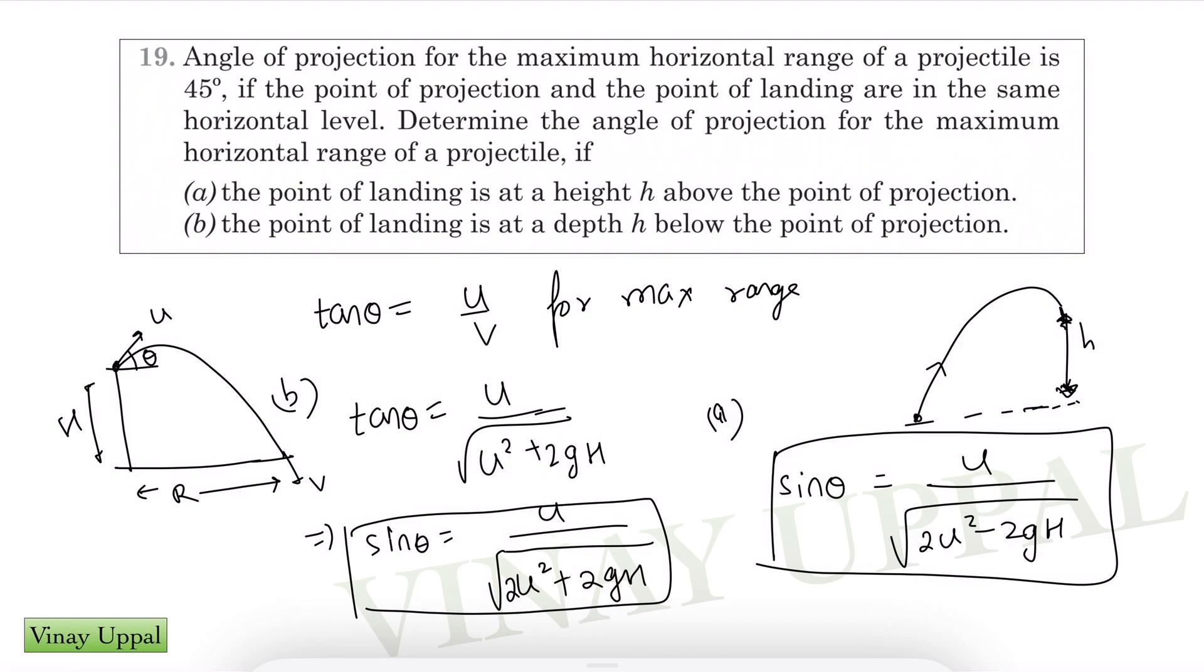If you want to derive part a from basics, you can just follow the same process we did for part b during our lectures. Just refer to that theory where we derived the maximum range for an oblique projectile. In the same expression, this h will be replaced by minus h because what we derived was for a particle descending and now we want to do it for a particle ascending in part a.